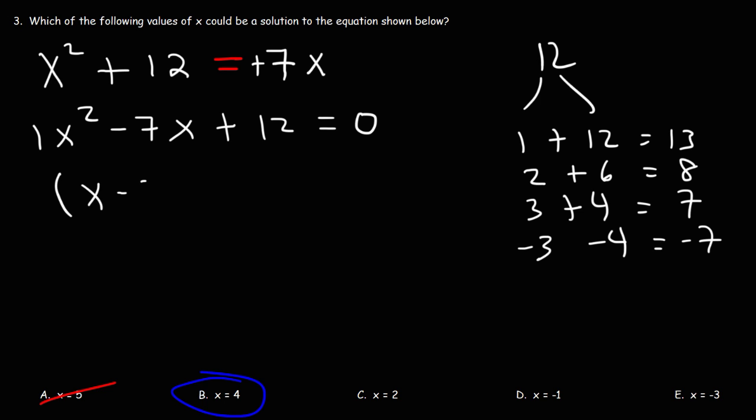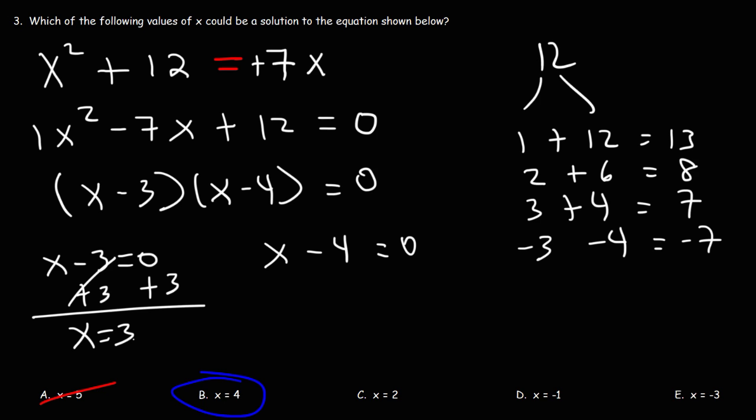So to factor, it's going to be x minus 3 times x minus 4. Now what you need to do is set each factor equal to 0 and solve for x. So what we're going to do here is add 3 to both sides and so we're going to get x is equal to 3. Now for the other one, we're going to add 4 to both sides. Negative 4 plus 4 cancels, so we get x is equal to 4. And this is the answer that we do have listed, answer choice B.